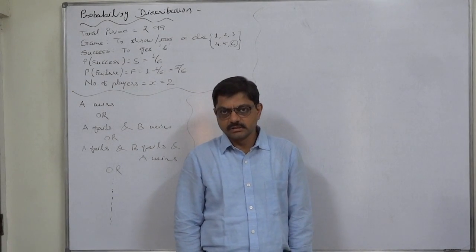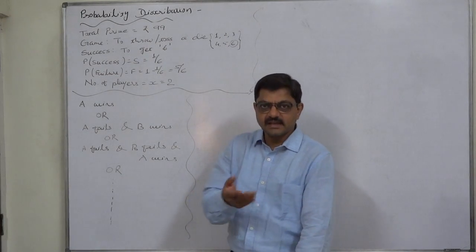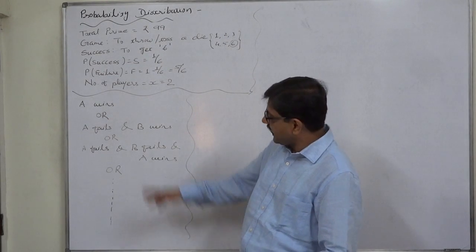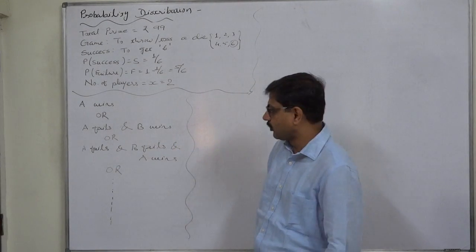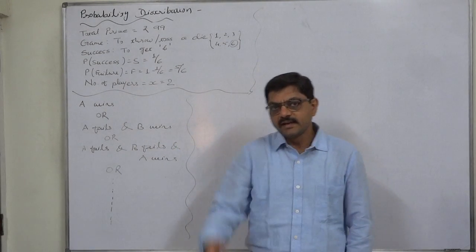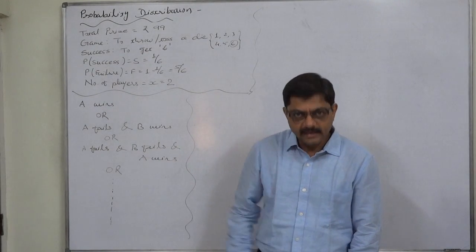The person who gets six first wins the game. A first throws, that means A starts the game, and if he fails B throws, and if he fails A again throws, and so on. That means infinitely the game can be continued until one of them gets six.